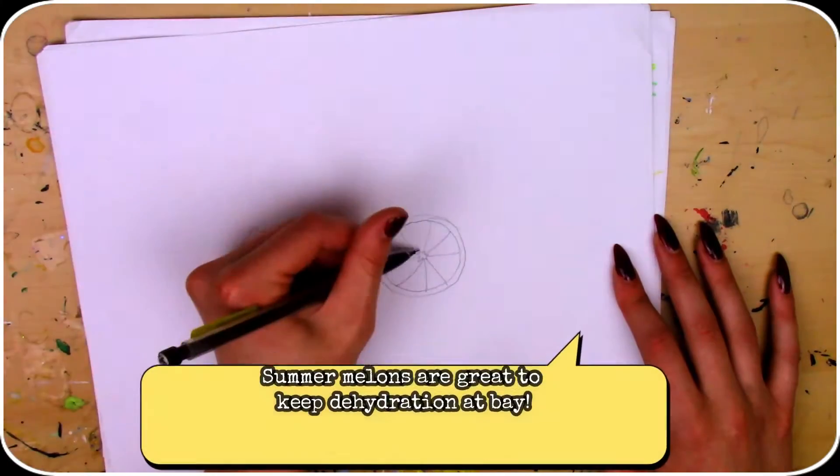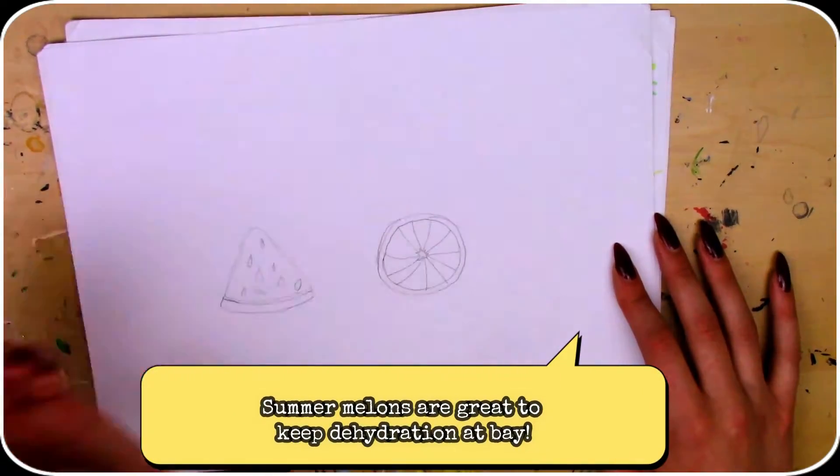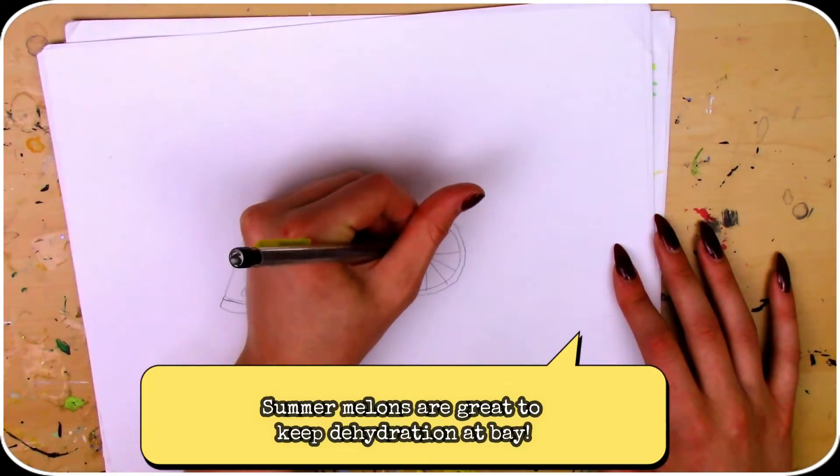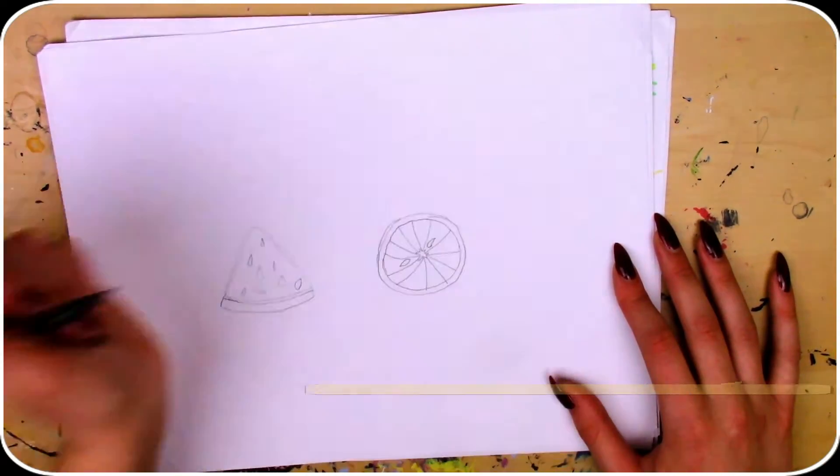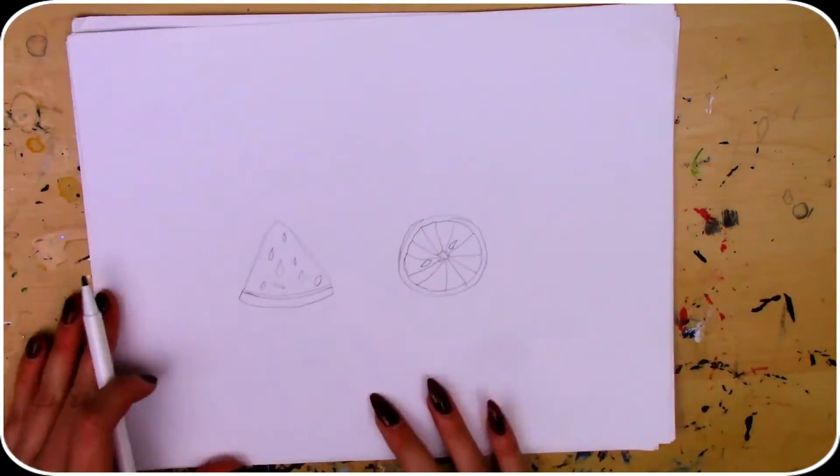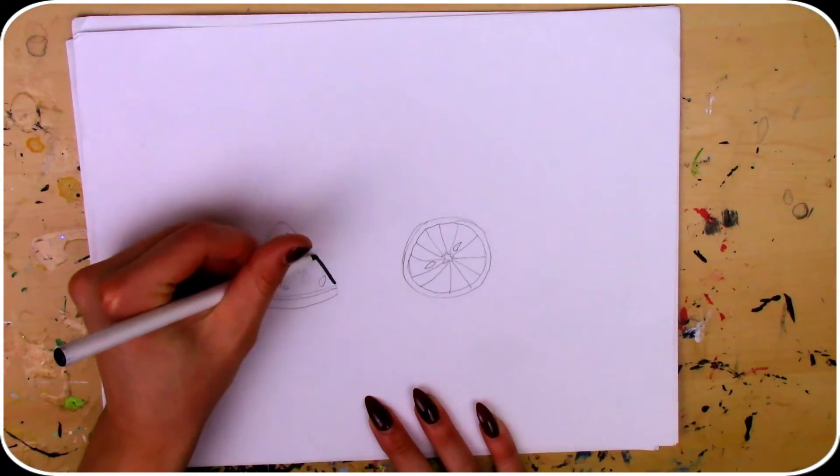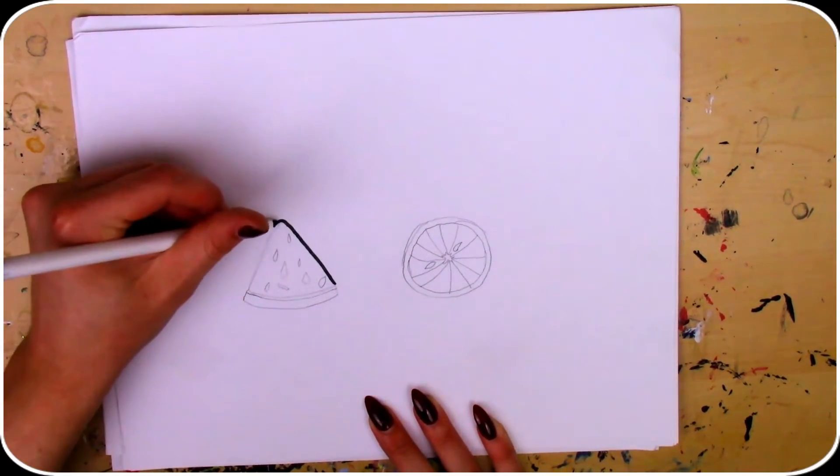And lastly summer melons are great to keep you hydrated. They're around 92% water and filled with electrolytes to keep that dehydration at bay. Now all I'm going to do is outline these and we'll get them 3D printed.